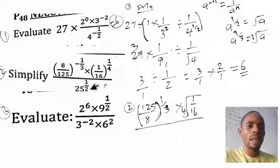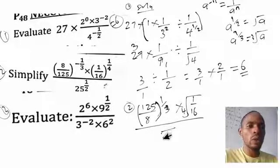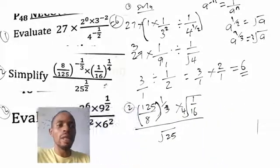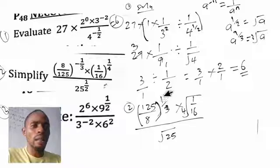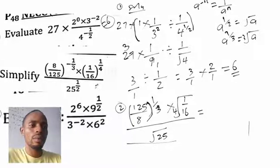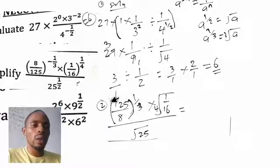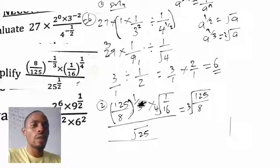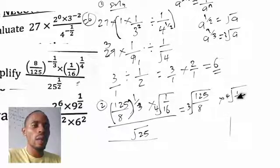Because of this fractional index of 1 over 3, we will find the cube root of 125 over 8. Multiplied by — for the 1 over 4 power, we find the fourth root of 1 over 16. And all of this is divided by the square root of 25. So we need: the cube root of 125 over 8, times the fourth root of 1 over 16, divided by the square root of 25.